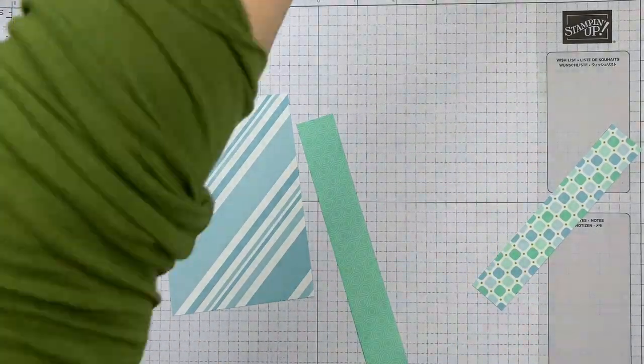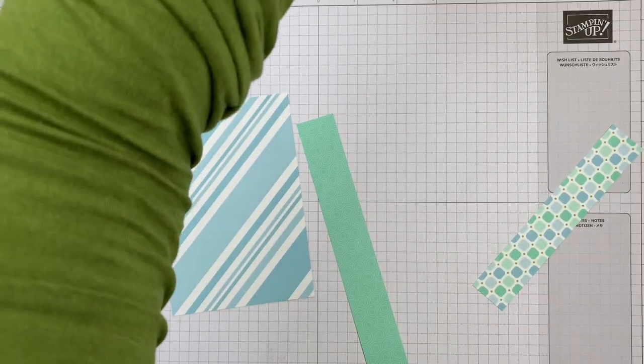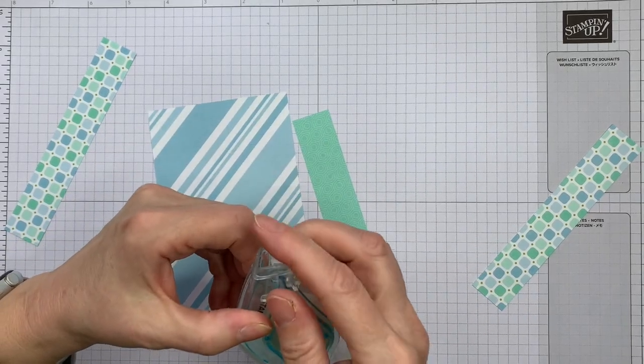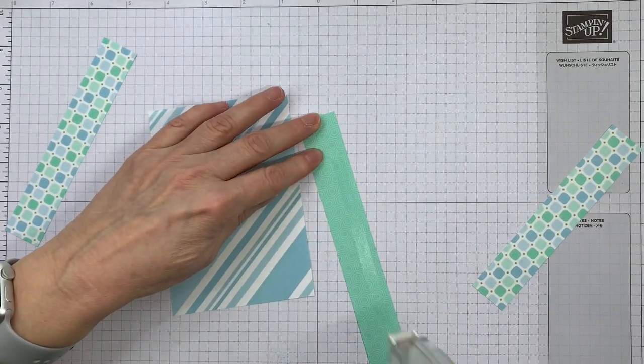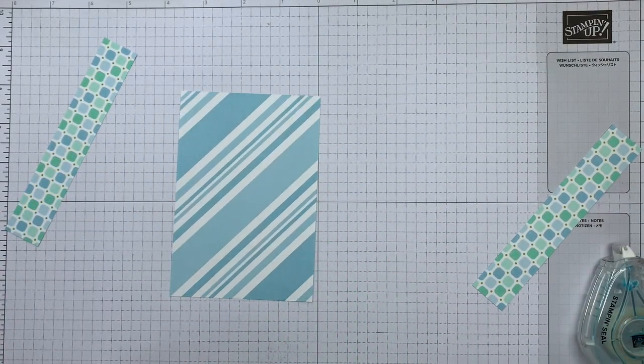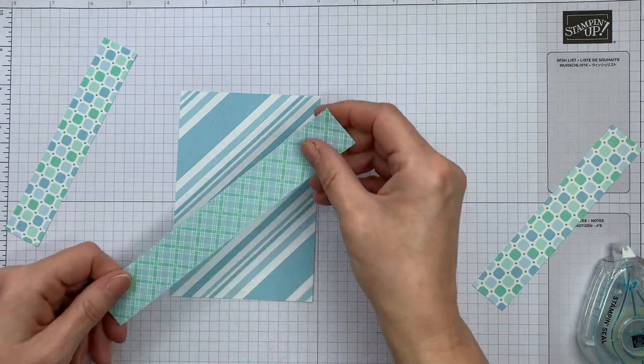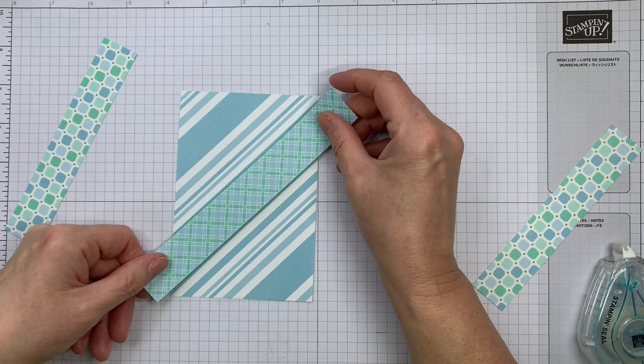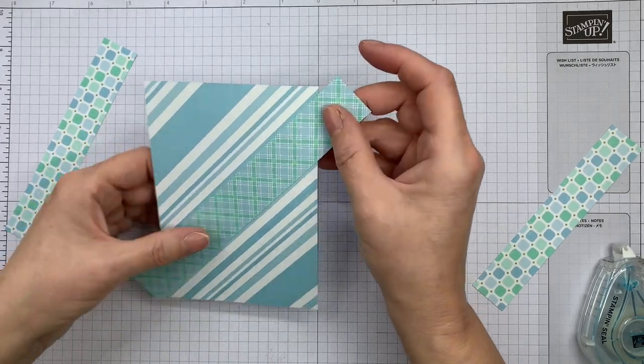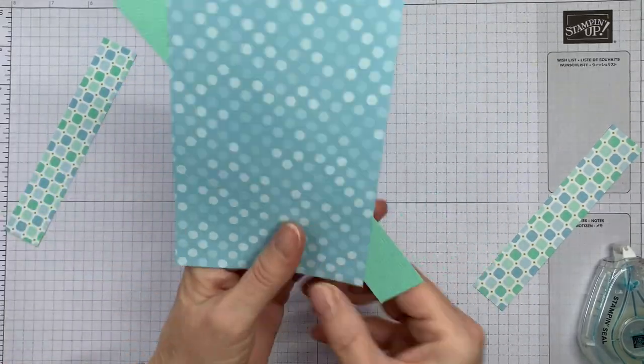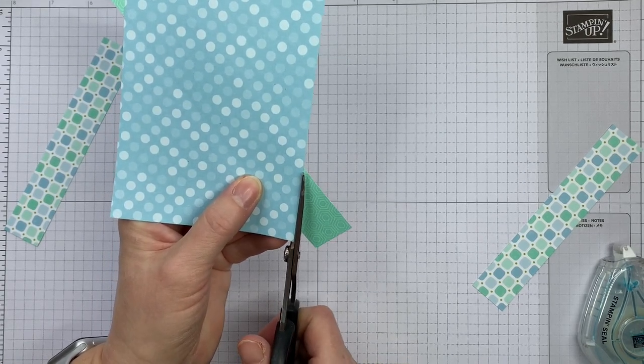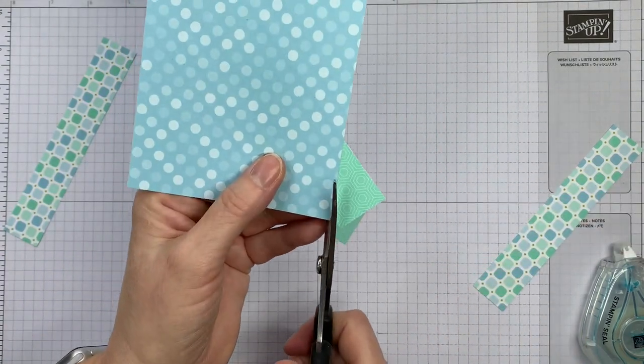So I'm just going to adhere these. And I find it easiest to actually, I probably should have got my silicone mat because it's going to stick to other things, but we'll risk it. So the silicone mat would stop the adhesive sticking to bits that I don't want. So I'm just going to stick that across and then flip it over and use the back as a guide for cutting away the excess. So nice and easy to do.